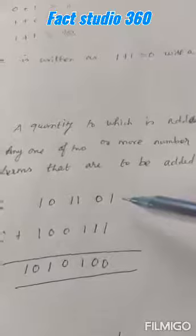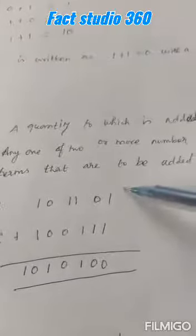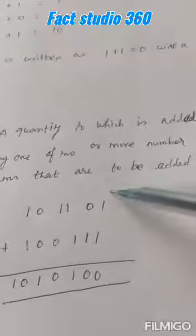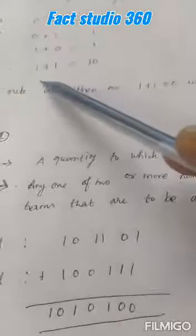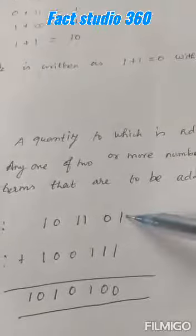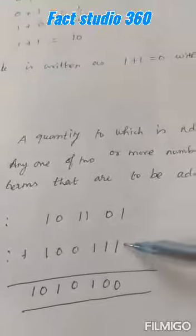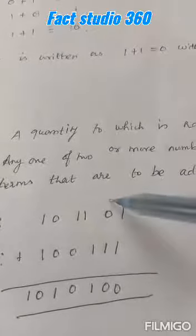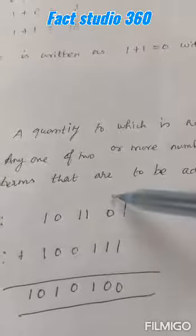Just like decimal addition, we move from right to left. 1 plus 1: from the fourth rule, 1 plus 1 is equal to 10. So the 0 is placed here and the carry 1 is taken to the next column.